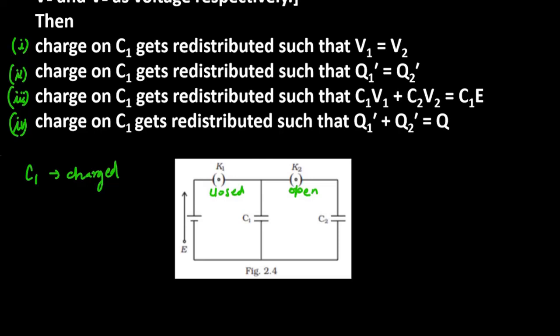Now, K1 is opened and K2 is closed. So now C1 will redistribute its charges. Equal charges will be given to C2. So this will give us charge redistribution. Because K1 will be open, the charges here will be redistributed in this whole circuit. C2 will get charged in the second case because of C1.